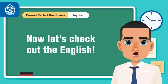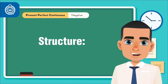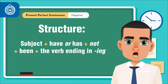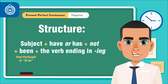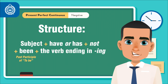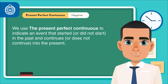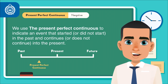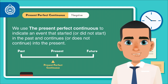Now let's check out the English. The structure is as follows: subject plus the auxiliary have or has, depending on the subject, plus not, plus been — the past participle form of to be — plus the verb ending in -ing. We use the present perfect continuous to indicate an event that started or did not start in the past and continues or does not continue into the present.